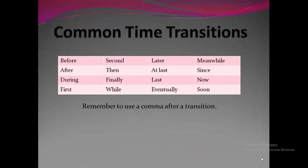Common time transitions include: before, after, during, first, second, then, finally, while, later, at last, eventually, meanwhile, since, now, and soon. If you're writing more elaborately, you can use: on the one hand, on the other hand, although, however, etc. Remember to use a comma after a transition where it is necessary. Most transition words require a comma — this is obligatory, not optional.